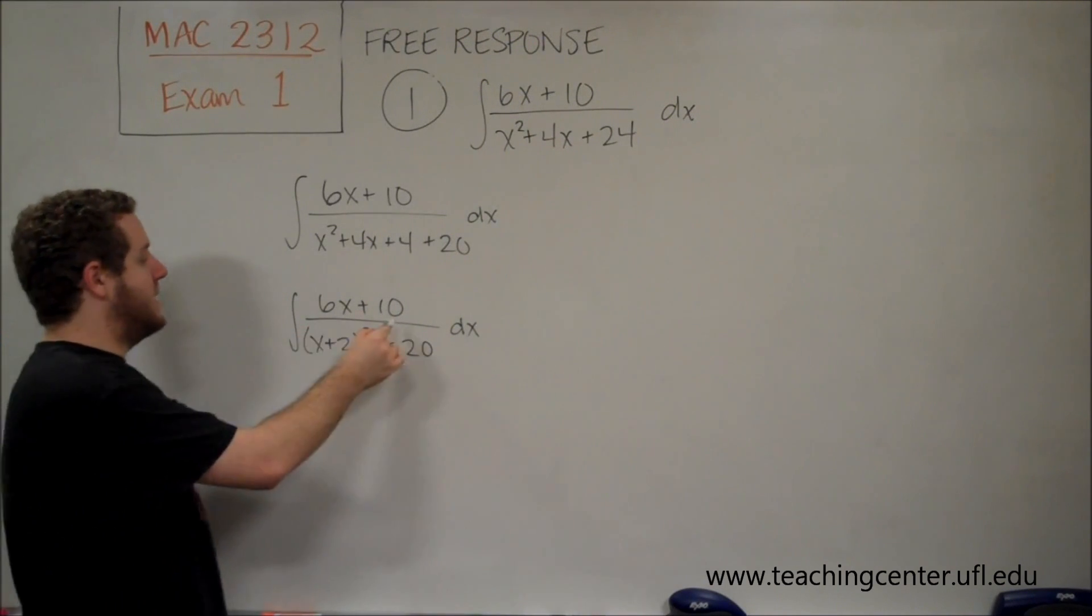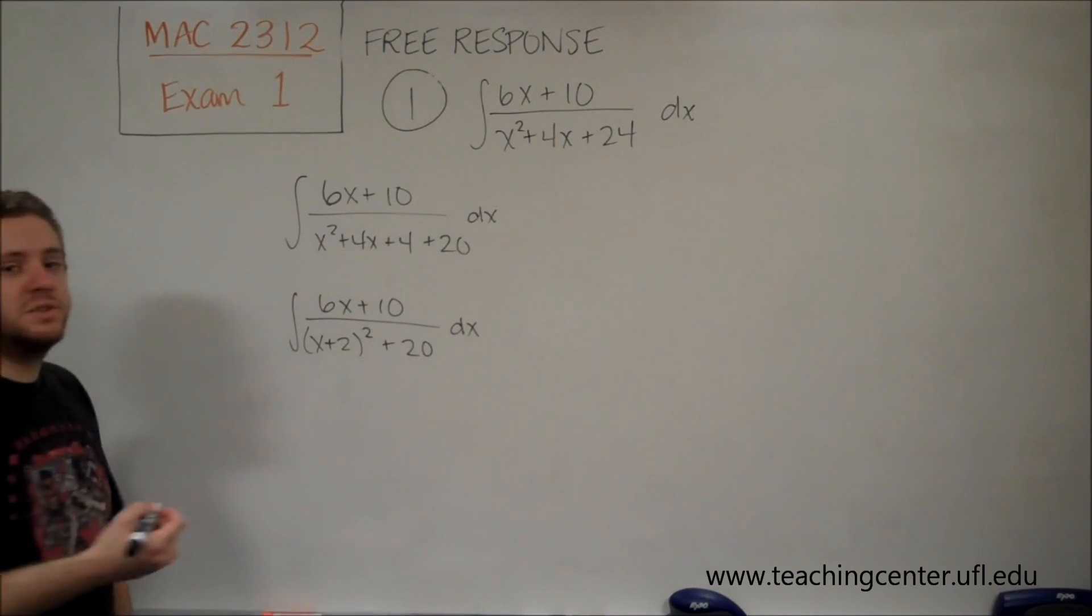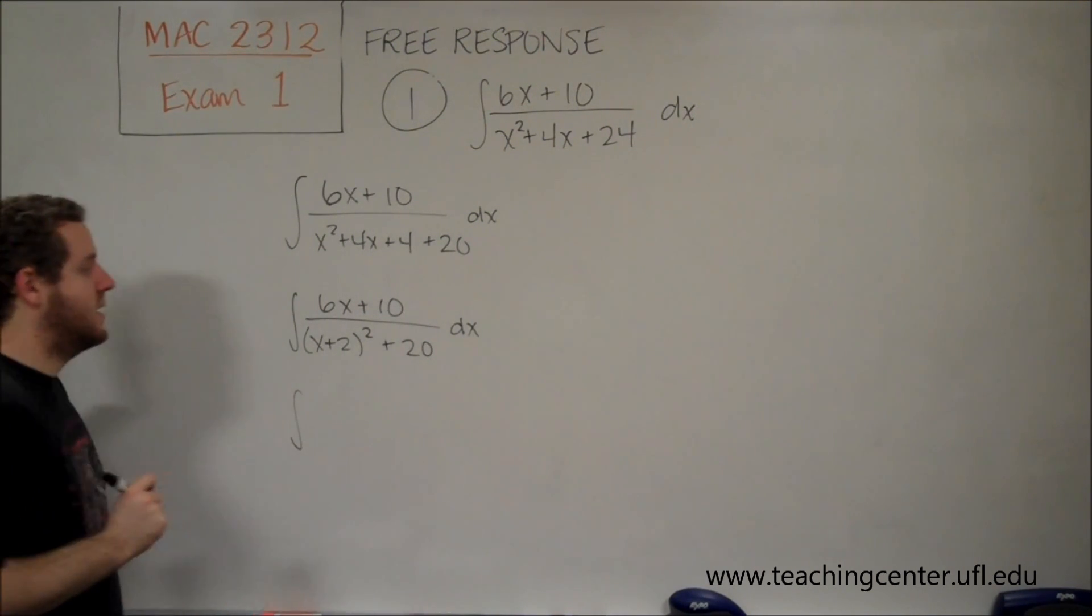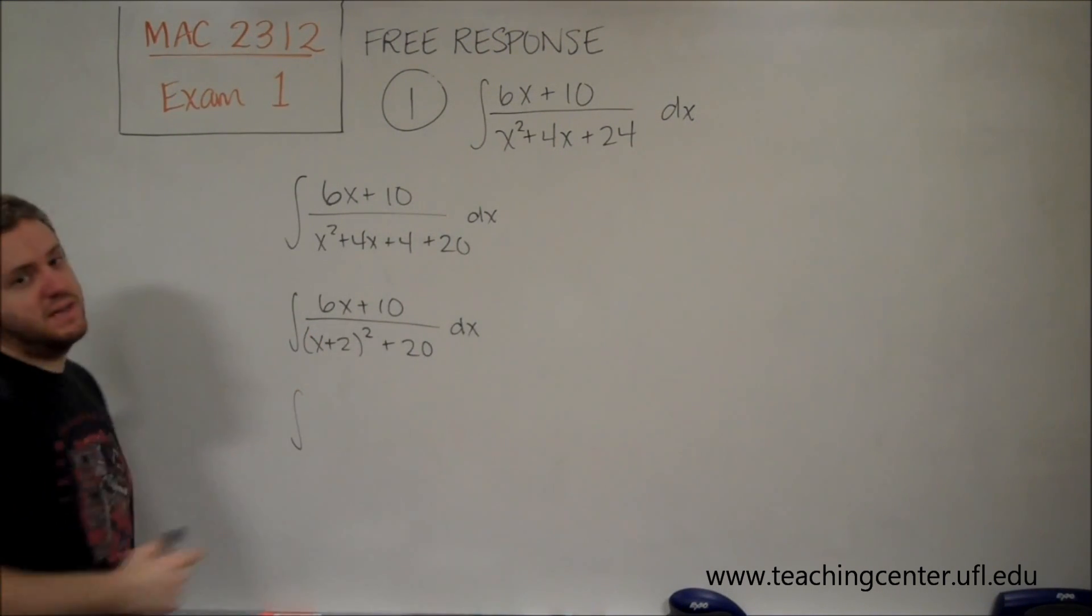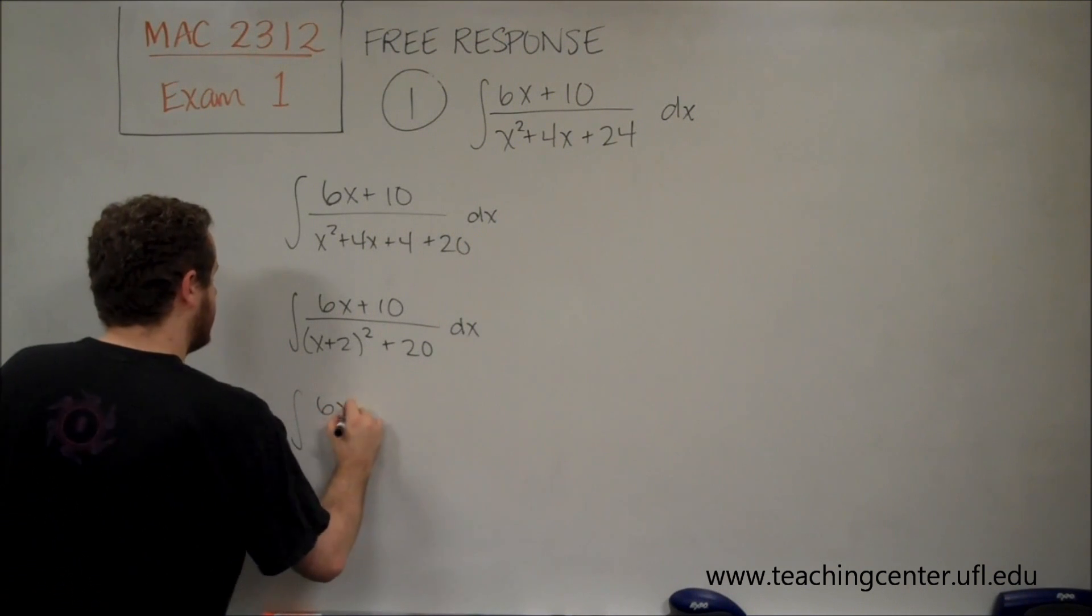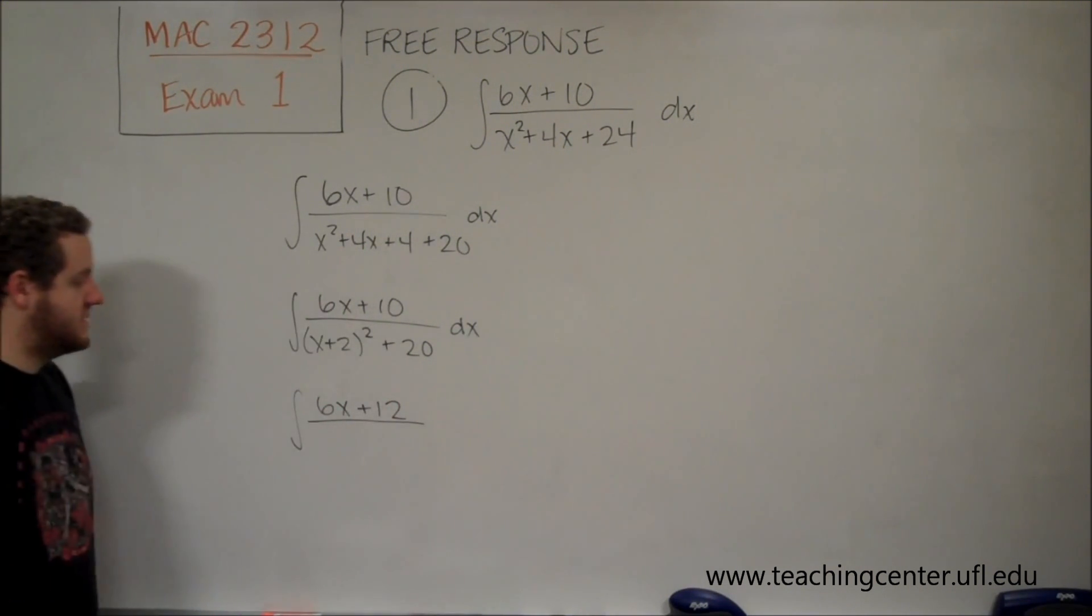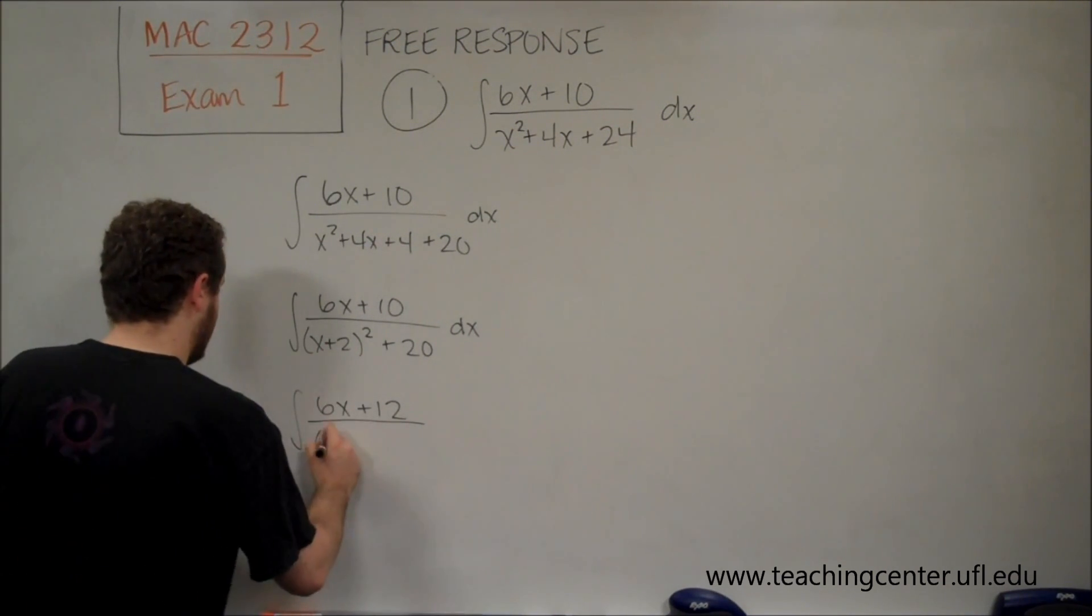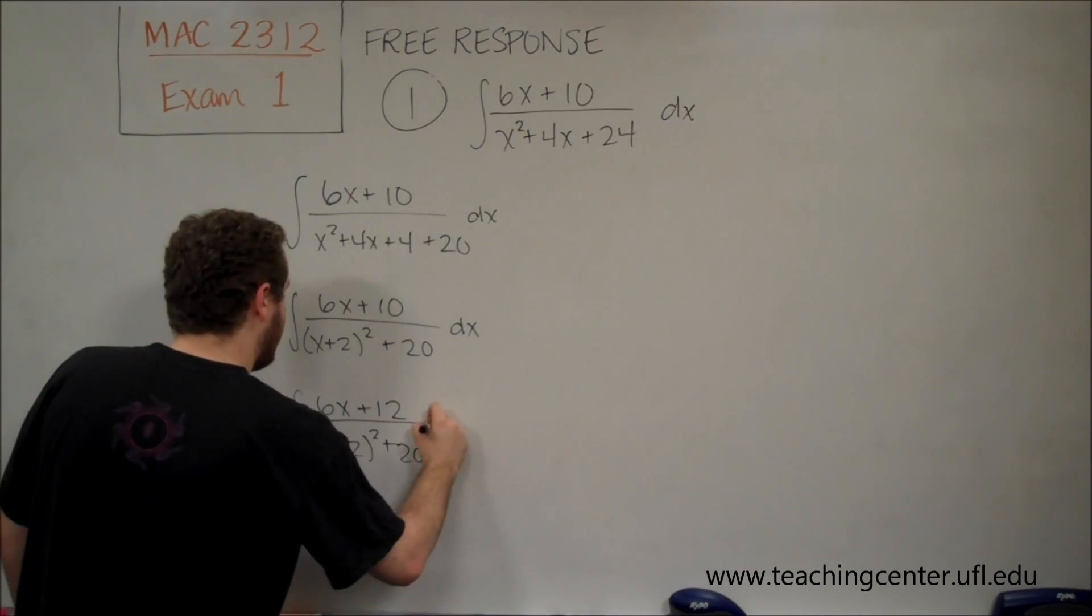So our numerator has to be a multiple of some sort of x plus 2. So right now it's not, but we could get it that way. And what we're going to do here is instead of use 6x plus 10, we're going to split this into two different integrals. One of which is an exact multiple of x plus 2. So an exact multiple of x plus 2 would be if we had 6x plus 12. Because if our 6 factored out, that would be exactly x plus 2.